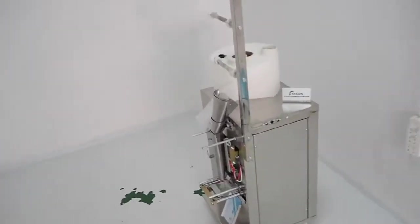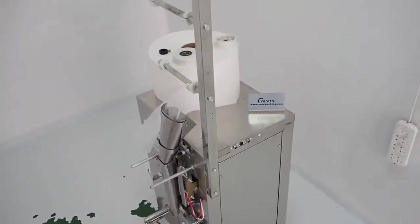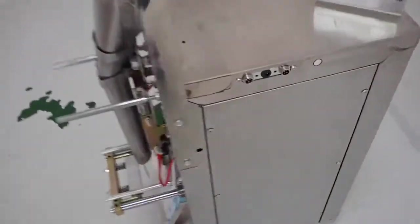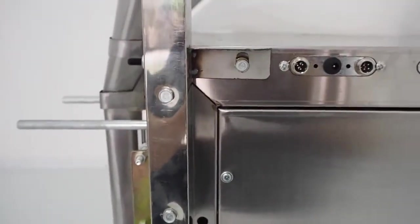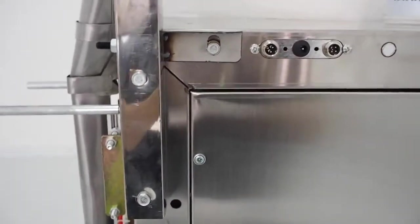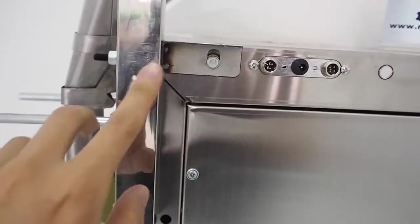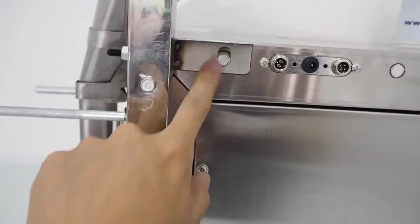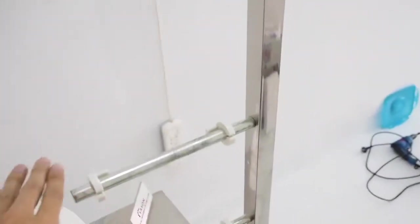The first thing you need to do is to install the rack. There are three bolts here that you need to install in order to fix the rack. After that, you are going to install these three bars.